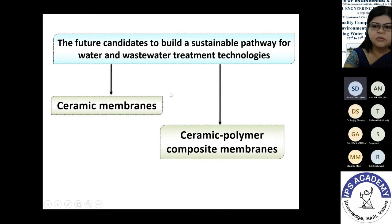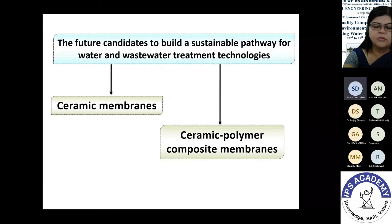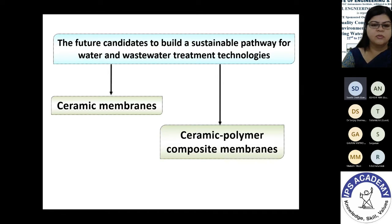The future candidates to build a sustainable pathway in water and wastewater treatment are ceramic membranes and ceramic-polymer composite membranes. The composite membrane brings the features of both: the ceramic bottom support provides robustness and high flux, while the top polymeric layer allows very selective reduction of pore size to achieve the desired separation.